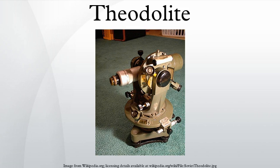In today's theodolites, the reading out of the horizontal and vertical circles is usually done electronically. The readout is done by a rotary encoder, which can be absolute, e.g. using gray codes, or incremental, using equidistant light and dark radial bands. In the latter case the circles spin rapidly, reducing angle measurement to electronic measurement of time differences. Additionally, CCD sensors have been added to the focal plane of the telescope, allowing both auto-targeting and the automated measurement of residual target offset. All this is implemented in embedded software.